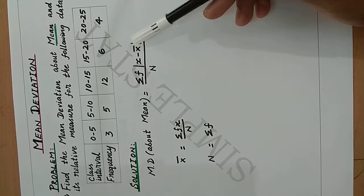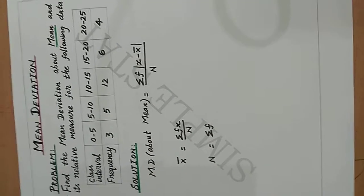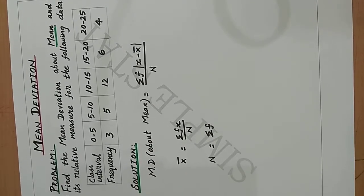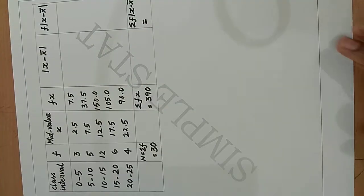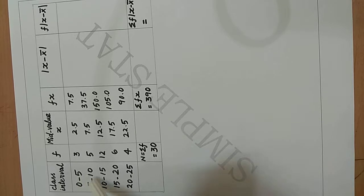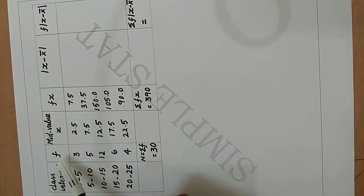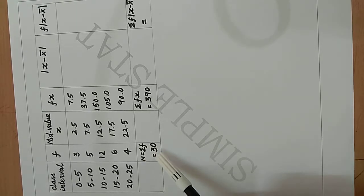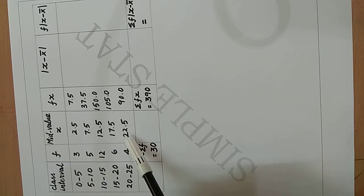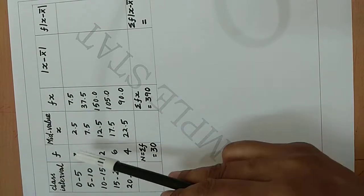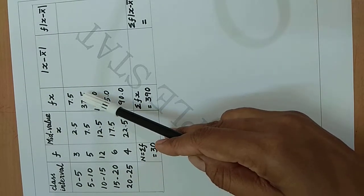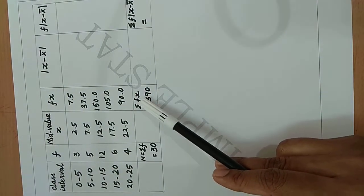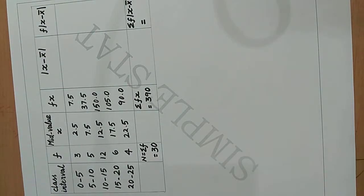To find mean deviation, the first step is to find the mean value. We proceed with the tabulation: write the given exclusive type class interval, the frequency values, and find the total. The total frequency n is 30. Then find the mid values, and compute fx (f × x): 3 × 2.5 = 7.5, 5 × 7.5 = 37.5, and so on.